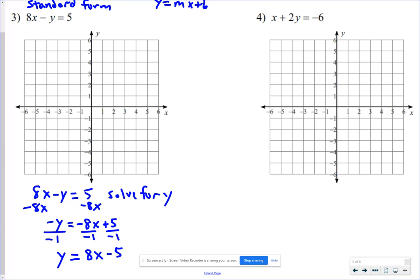Either way, it will come out to y equals positive 8x. Negative divided by negative turns into a positive. And negative 5, because positive divided by negative is a negative. Now we're going to graph it just like we did number 1. We're going to look at the y-intercept. Y-intercept is negative 5.